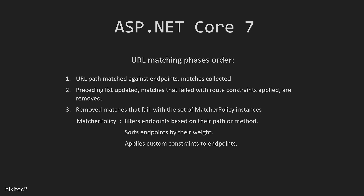From the list of matches, any that don't meet the route constraints are removed. Then the list goes through another check, where matches that don't pass a set of MatcherPolicy rules are removed. MatcherPolicy is a class in .NET Core 7 that helps rearrange endpoint priorities. This class filters endpoints by their path or method, arranges endpoints by their priority or weight, and enforces special conditions on endpoints.